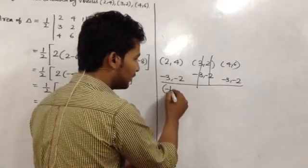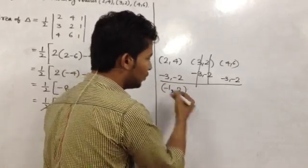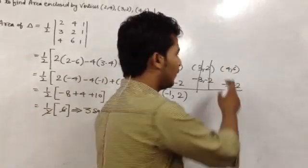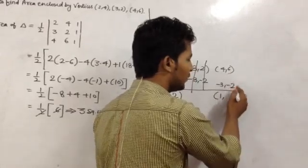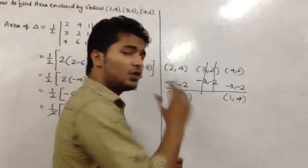Minus 1, 4 minus 2 is plus 2. Similarly here, 4 minus 3 is 1 and 6 minus 4 is 2. Okay, now this is what we can solve.